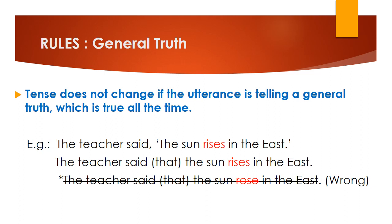Tense does not change if the utterance is telling a general truth, which is true all the time. For example, the teacher said 'The sun rises in the east.' In reported speech it becomes: the teacher said that the sun rises in the east. As you can see, 'rises' remains 'rises.' It does not change to 'rose,' because the fact that the sun rises in the east is true all the time. Therefore we do not change the tense of this kind of general truth.